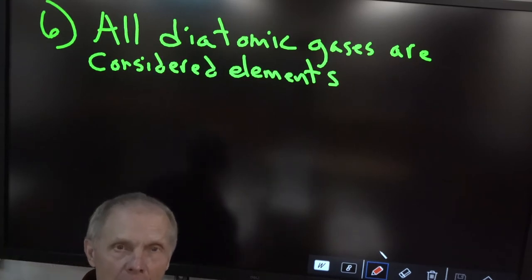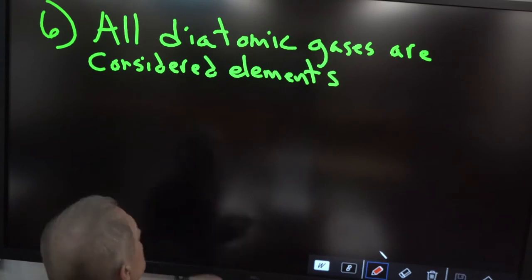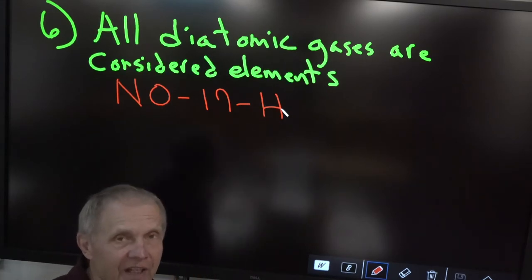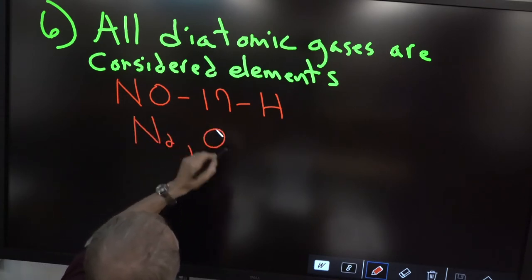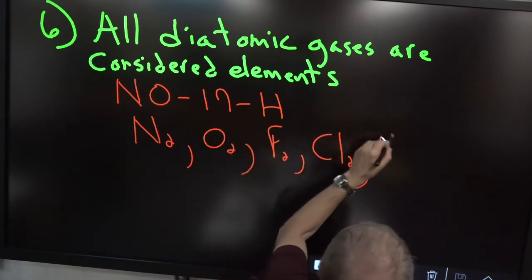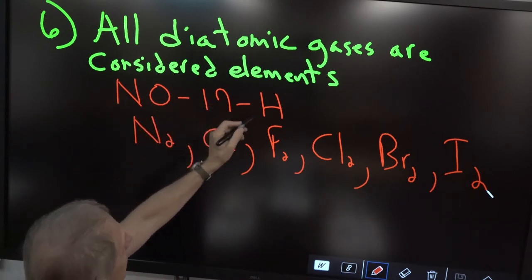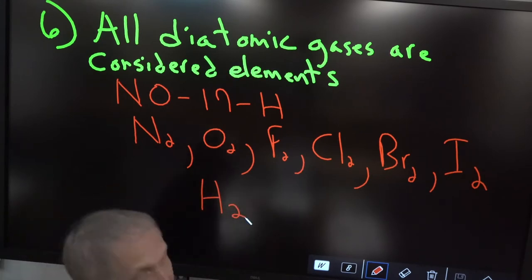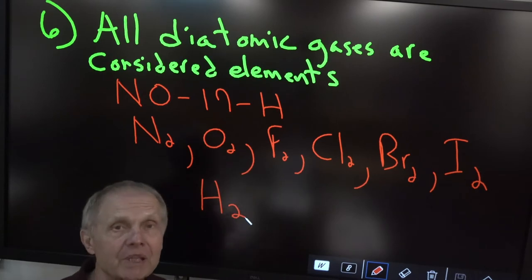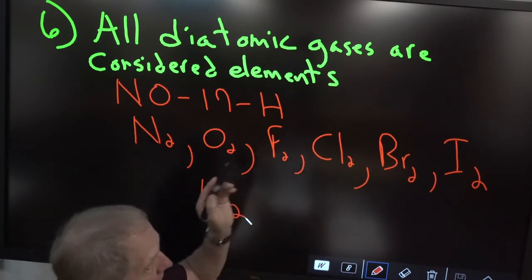Diatomic gases are also considered elements. Here's the way to memorize them: NO17H. N₂, O₂, group 17 — F₂, Cl₂, Br₂, I₂ — and H₂. These don't look like elements because there are two of them, but that's fine because it's the same thing. All diatomic gases are considered elements. They're not considered compounds, they're not considered mixtures — diatomic gases are elements.